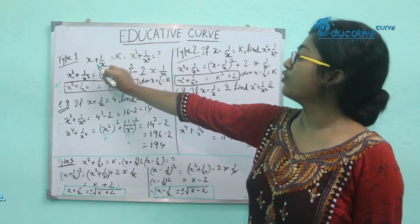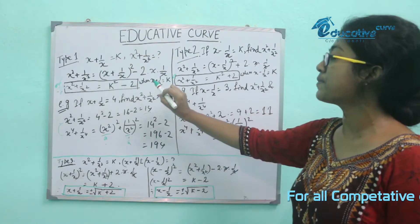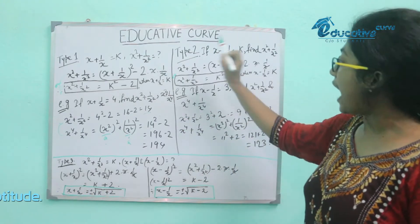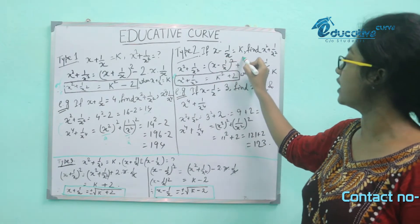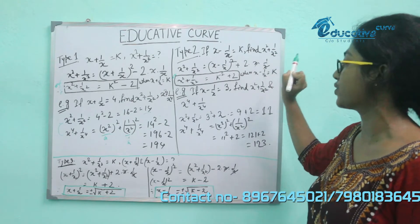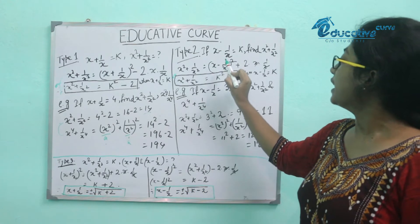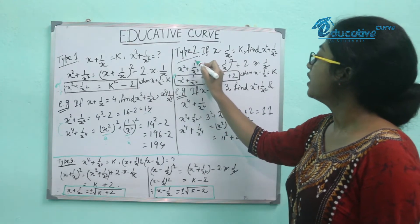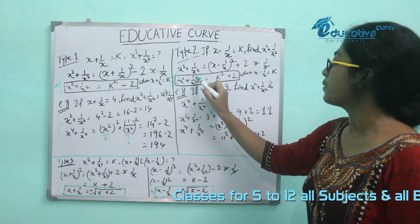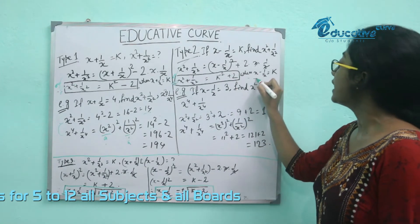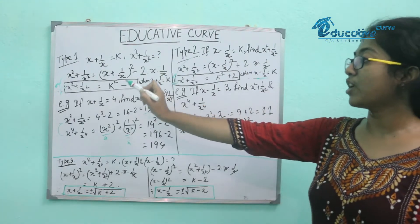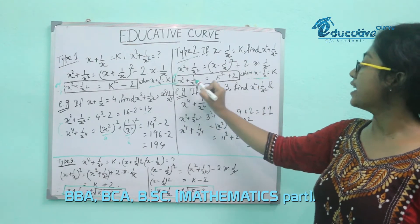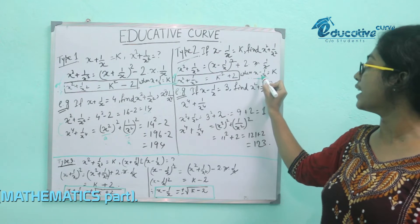Type 2: x squared plus 1 by x squared is equal to k squared plus 2, when x minus 1 by x is equal to k.